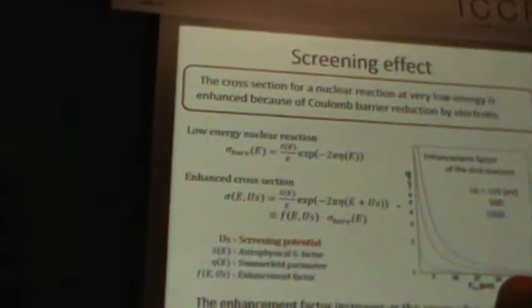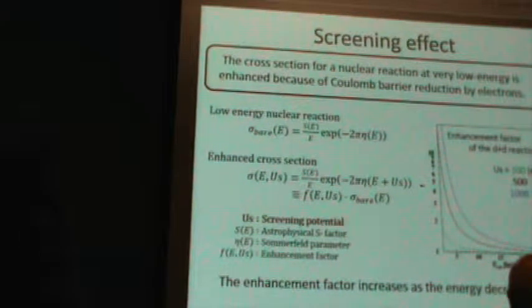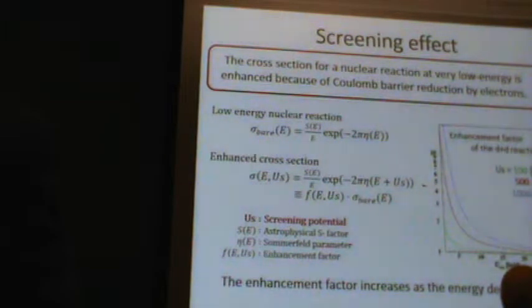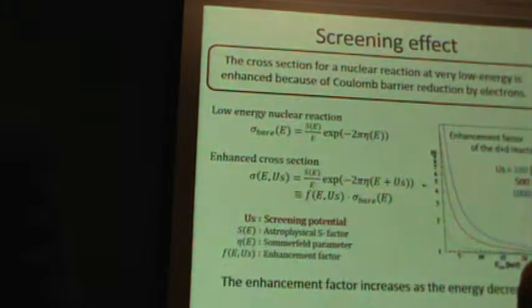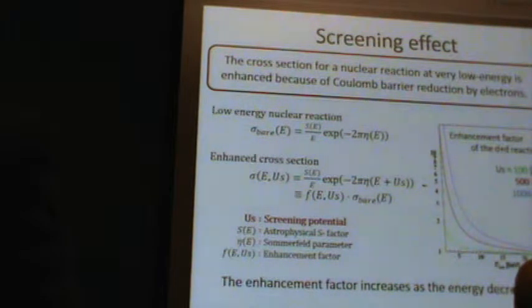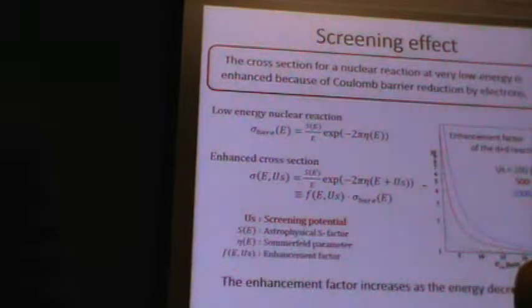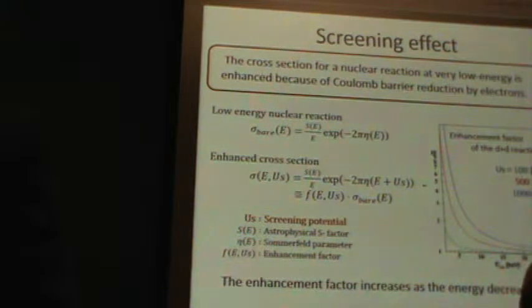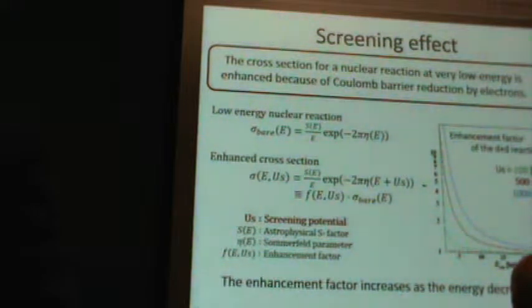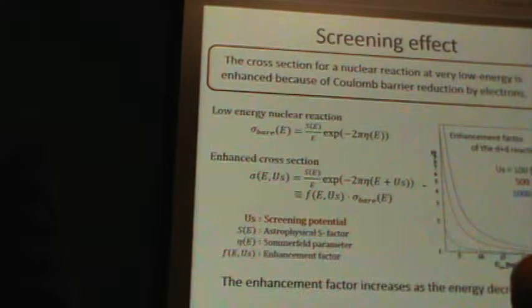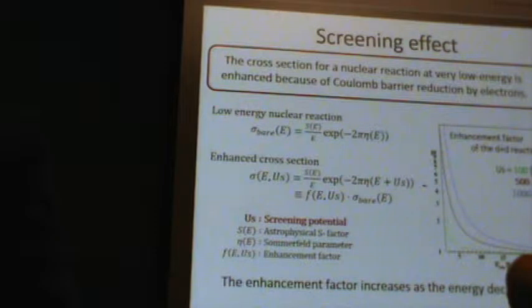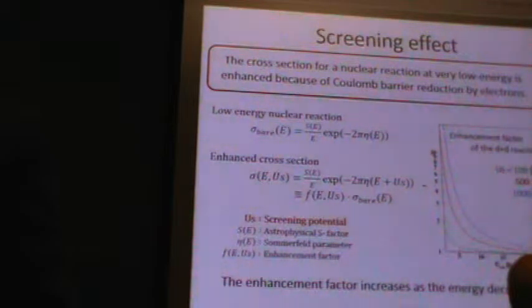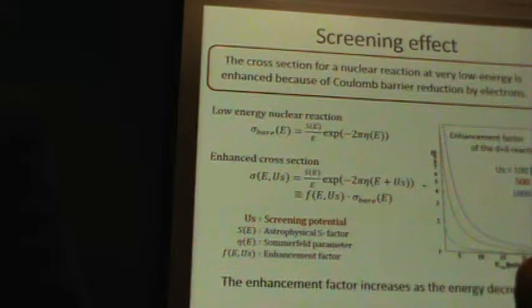First of all, I will explain the screening effect in the DD reaction. The cross-section for nuclear reaction at very low energy is enhanced because of Coulomb barrier reduction by electrons. When the cross-section is enhanced, this effect is called the screening effect. The decrement value of the Coulomb barrier is called the screening potential. This figure shows the enhancement factor of the DD reaction with each screening potential. Since the probability has a strong dependence on the energy, the enhancement factor increases as the energy decreases.